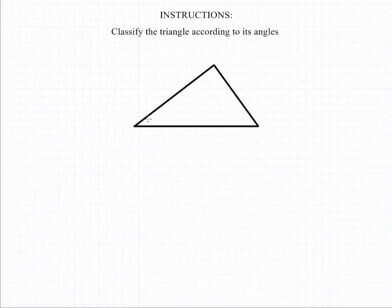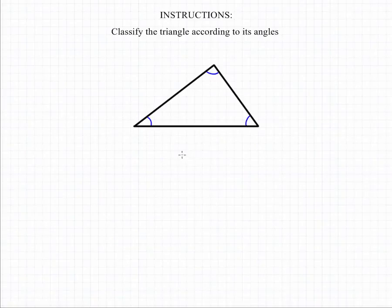In order to classify this triangle, we first want to look at the angles. So if we look at the measure of each of the angles of this triangle, we can see that all of the angles lie somewhere between a measurement of 0 degrees and 90 degrees.